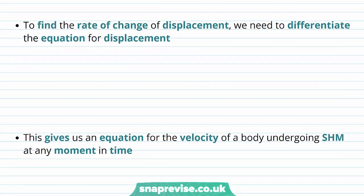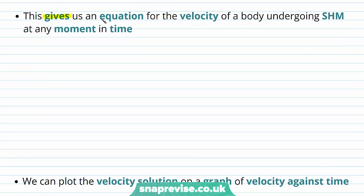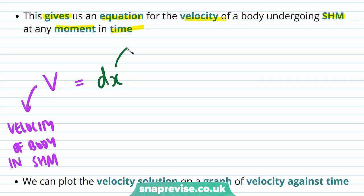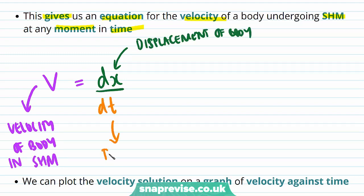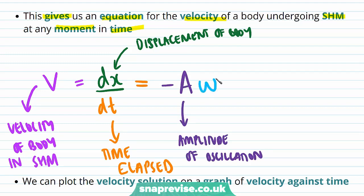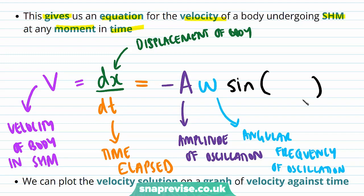To find the rate of change of displacement, we need to differentiate the equation for displacement, and this is how we find the velocity — by differentiating x with respect to time. This gives us an equation for the velocity of a body undergoing simple harmonic motion at any moment in time. The velocity v is equal to minus the amplitude of oscillation times the angular frequency of oscillation times sine of omega times t, where t is the time elapsed.